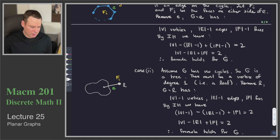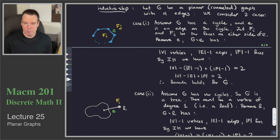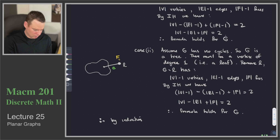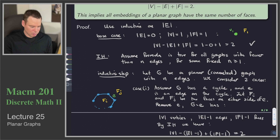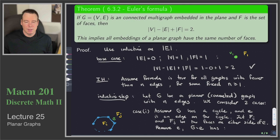Those are the only two cases — a graph either includes a cycle or it doesn't — so we're done with our inductive step. Therefore by induction the formula holds for all graphs, and we're done. We've proven that all planar graphs must satisfy Euler's formula: the number of vertices, the number of edges, and the number of faces are related to each other. This means if I know any two of these three values I can get the third. In the next lecture we will get into some more properties of planar graphs.